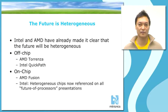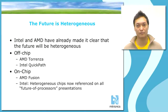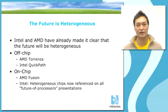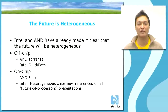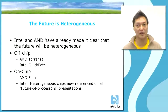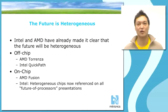But it goes further than that. On-chip, we're going to see heterogeneous computing as well. AMD have already announced Fusion, which will be a combined chip containing both GPU acceleration and CPU acceleration on the same chip. Intel have not launched a particular program publicly yet; however, in all their presentations regarding future processors, it is obvious that the chips will be heterogeneous.